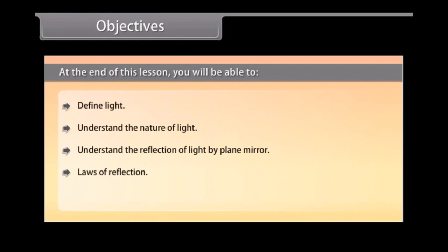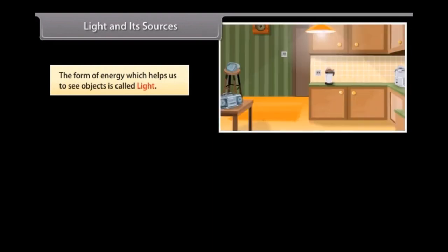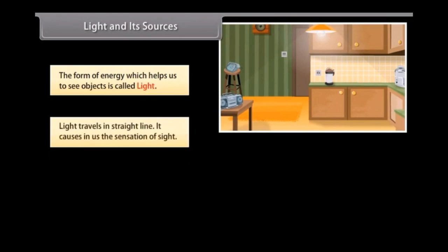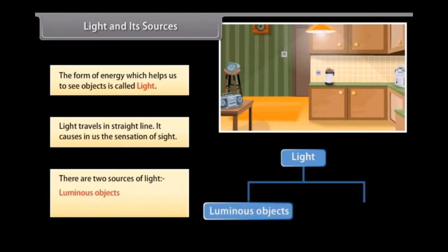Laws of reflection, differentiate between real and virtual image. Light and its sources. The form of energy which helps us to see objects is called light. Light travels in a straight line. It causes in us the sensation of sight. There are two sources of light: luminous objects and non-luminous objects.